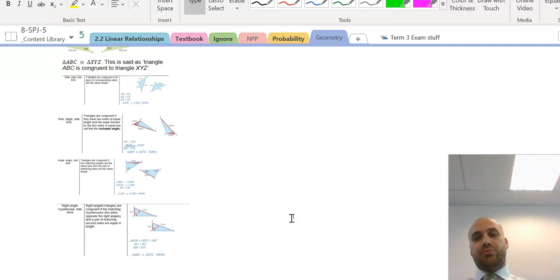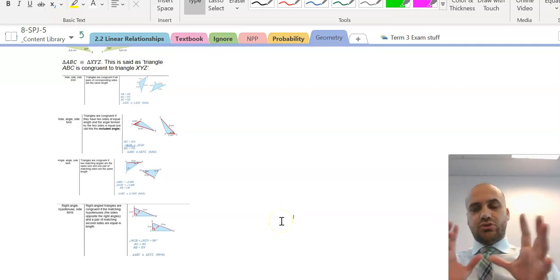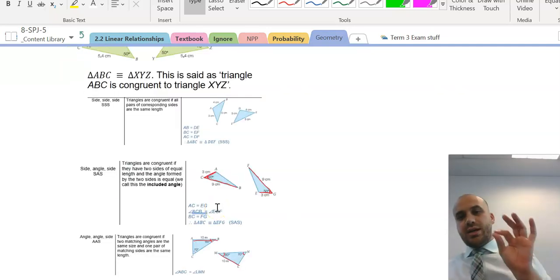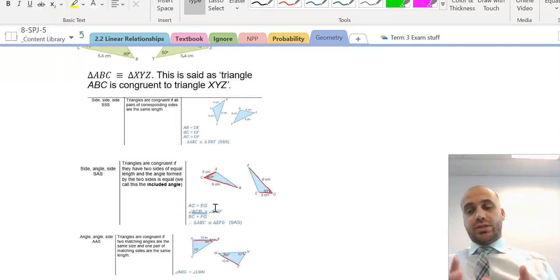And you need to learn those off by heart. You need to know that they all exist, and you need to be able to look at two triangles and say, this is the rule I'm going to use to figure out whether these are congruent or prove that these are congruent. So, that's it for this video. In the next one, I'm going to do a bunch of worked examples on congruent triangles.